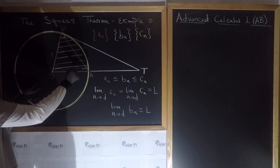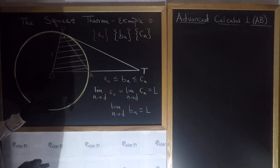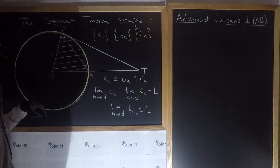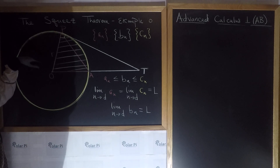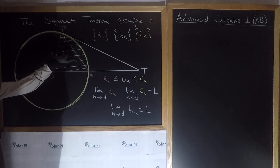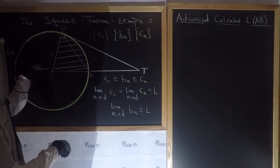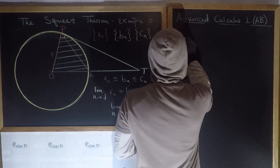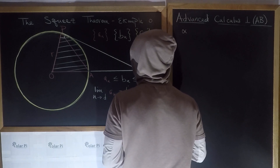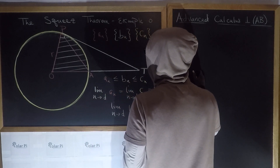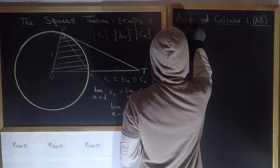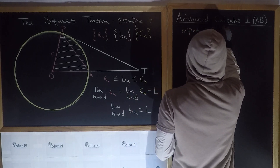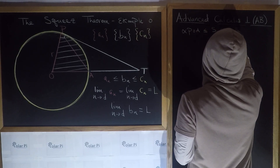We also care about this shaded sector. Clearly, this visual shows that the area of this red triangle POA is less than the area of the shaded sector, which in turn is less than the area of right triangle POT — I use alpha for area. So writing that down: area of triangle POA is less than or equal to area of sector S, which in turn is less than or equal to area of triangle POT.